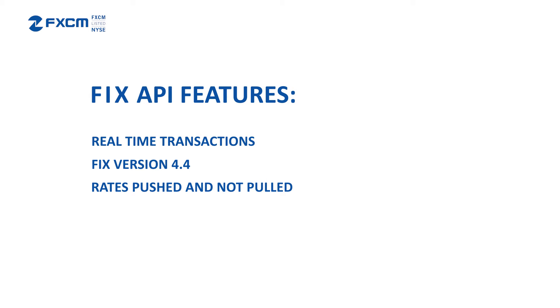FXCM supports FIX messaging version 4.4. This is by far our fastest and most popular API offered and pushes data instead of pulling data. For clients whose primary concern is speed, FIX is the optimum solution. FXCM private client group clients also gain access to utilize the FIX API with market depth, a service typically available exclusively for large institutional clients only.